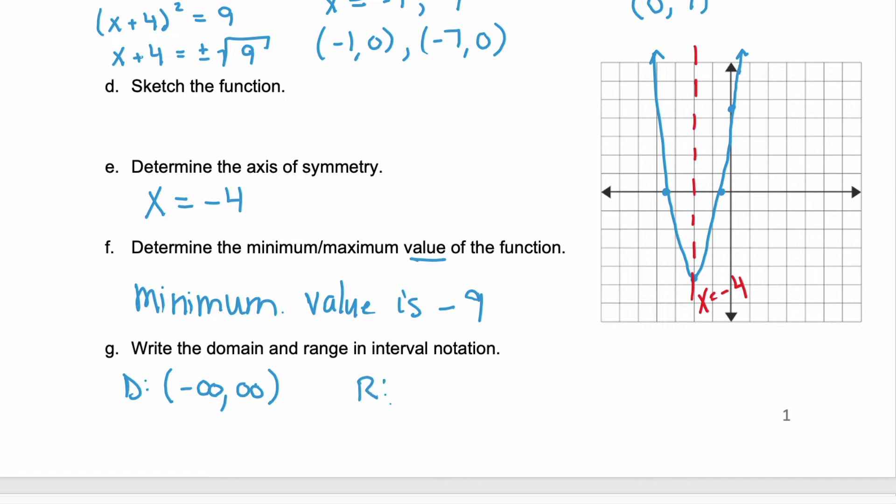But if we look at the range, the y values, those values are restricted. They're restricted by that minimum, so the lowest value we can have is a y of negative 9. But there's no maximum. It goes on through infinity.